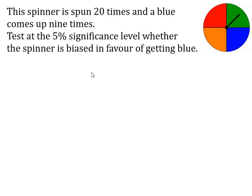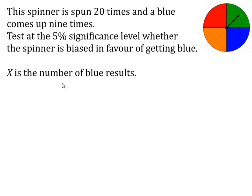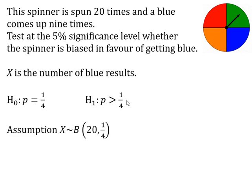So how do we do this one? Well, it starts off exactly the same. X this time is going to be the number of blue results — that is our random variable X. Next we write down the hypotheses. The null hypothesis assumes the default position: the probability of getting blue is a quarter. The alternative hypothesis this time is that P is greater than a quarter, since we're testing whether it's biased in favour of blue. Assuming the null hypothesis is true, we write down the distribution of our random variable.